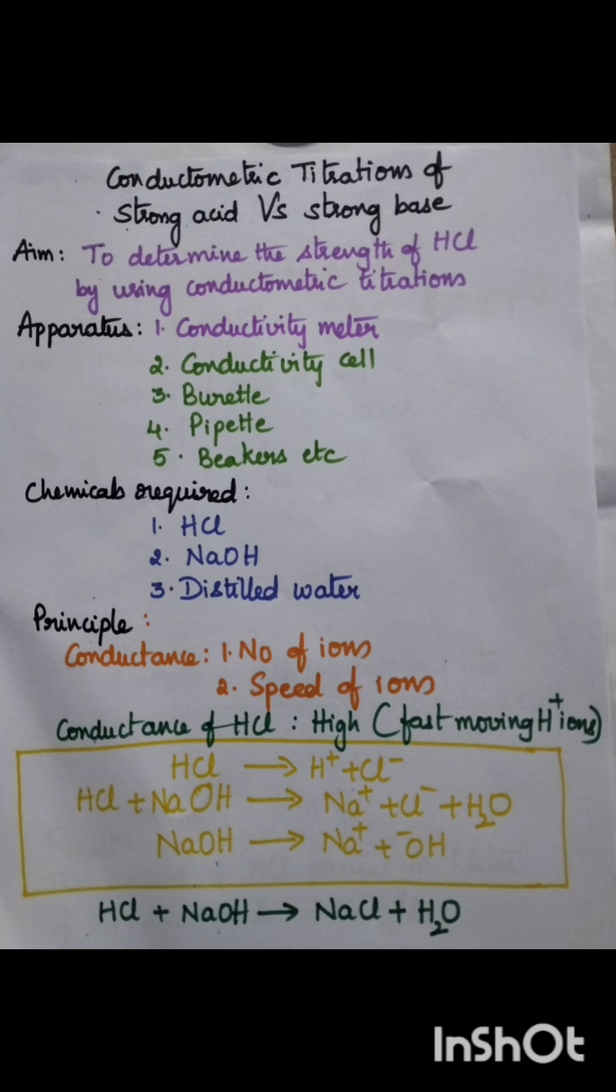Initial conductance of HCl is very high due to fast moving H+ ions. On adding 1 ml of NaOH each time, slowly the conductance decreases. After reaching the minimum value, again the conductance increases due to the release of fast moving OH- ions.